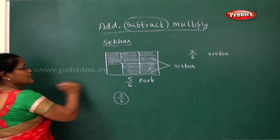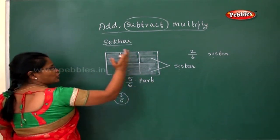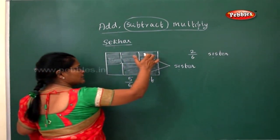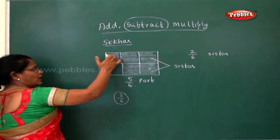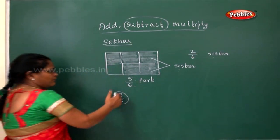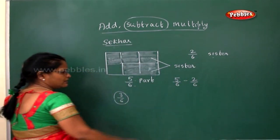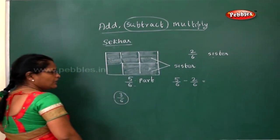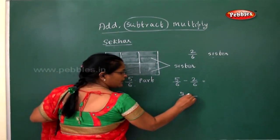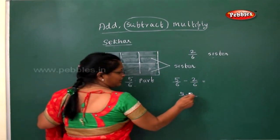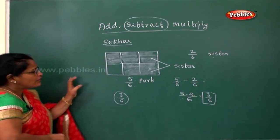Shaker had 5/6 — that is 5 parts out of 6. In that, he gave 2 parts (1 and 2) to his sister, which is 2 out of 6. The remaining is 1, 2, 3. Same way as I did addition: 5/6 minus 2/6 — take the common denominator 6, and the numerators: 5 minus 2 equals 3, so 3/6. This is how you do subtraction of fractions.